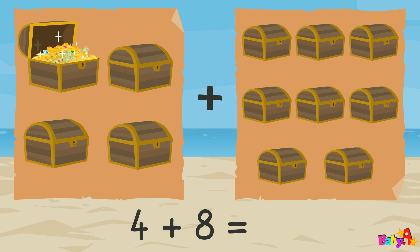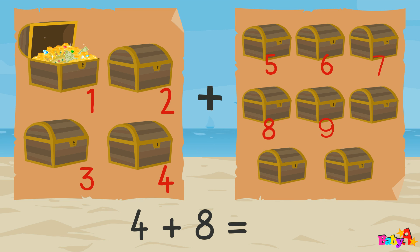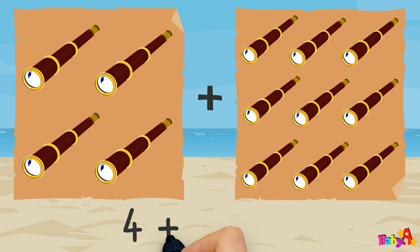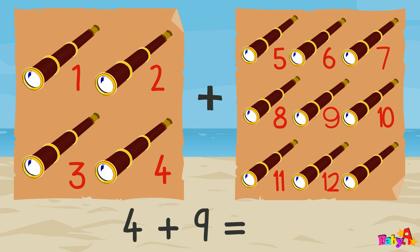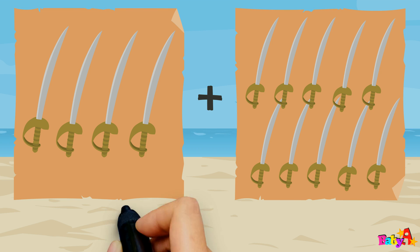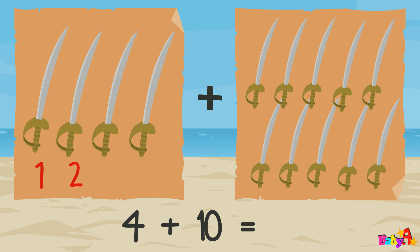4 plus 8 equal 1, 2, 3, 4, 5, 6, 7, 8, 9, 10, 11, 12 — 12. 4 plus 9 equal 1, 2, 3, 4, 5, 6, 7, 8, 9, 10, 11, 12, 13 — 13.